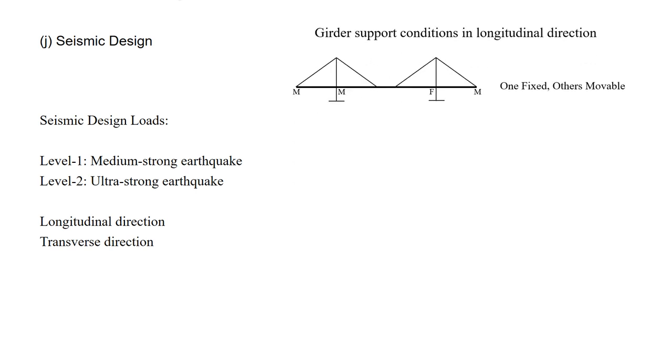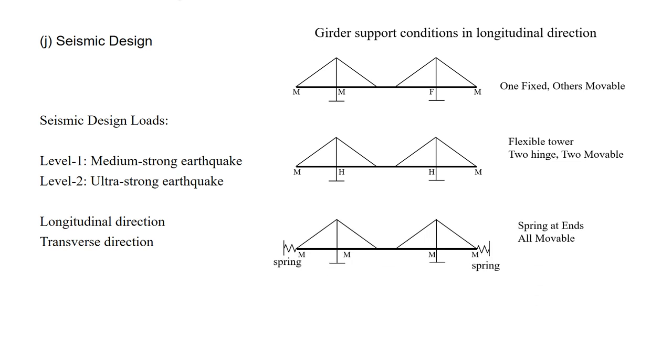There are several options for the girder support conditions in the longitudinal direction. One fixed at the tower or end support, others movable. For flexible towers, two hinges at the tower, other two movable. Springs are installed at the end of the girder, and all movable. All movable, sometimes it is called the floating system. These are all feasible. You can choose a proper one, considering the tower type, ground conditions, and so on.